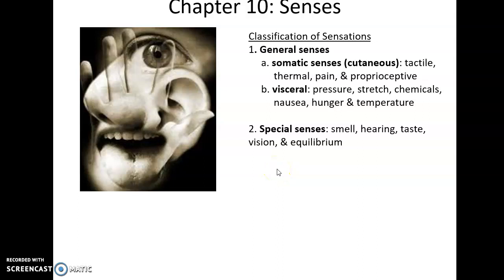Classifications of sensation: we have general sensations, which are found all throughout our body. They include the somatic senses, or cutaneous senses — associated with the skin and also with muscles. So tactile or touch, thermal (being aware of something being hot or cold), pain, and proprioceptive, relating to muscles.